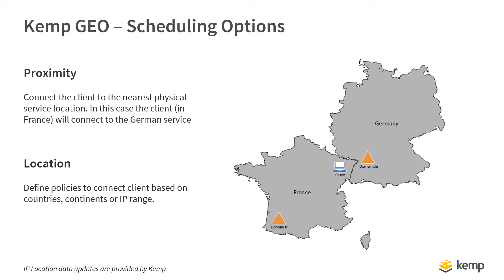KEMP's Geo can also redirect traffic based on the client's proximity or location. With proximity-based scheduling, clients will be connected to the physically closest service. With location-based scheduling, policies can be defined to direct client traffic based on their country or client IP address. KEMP provides regular updates of IP location data.